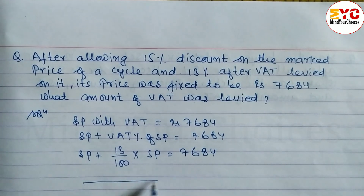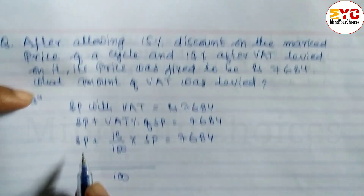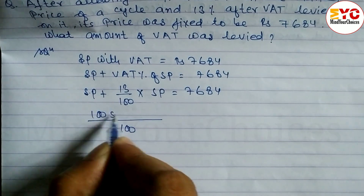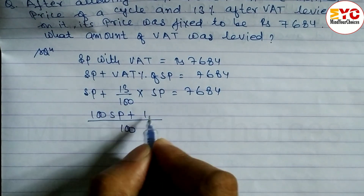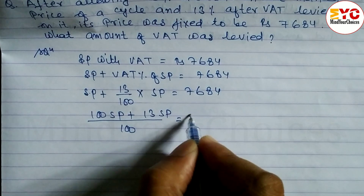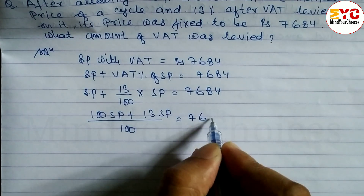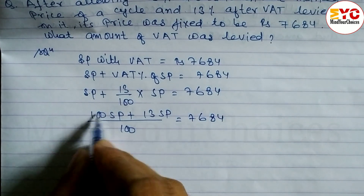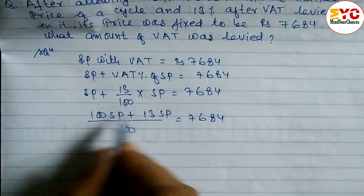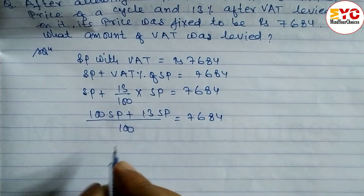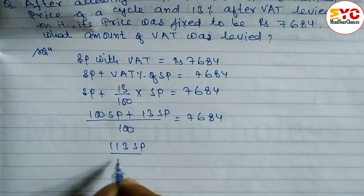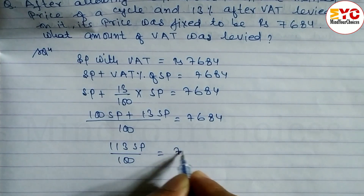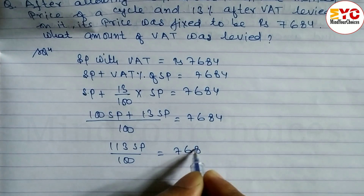Now we take LCM, which is 100. So: 100 SP plus 13 SP divided by 100 equals 7684. Adding these two terms, we get 113 SP divided by 100 equals 7684.